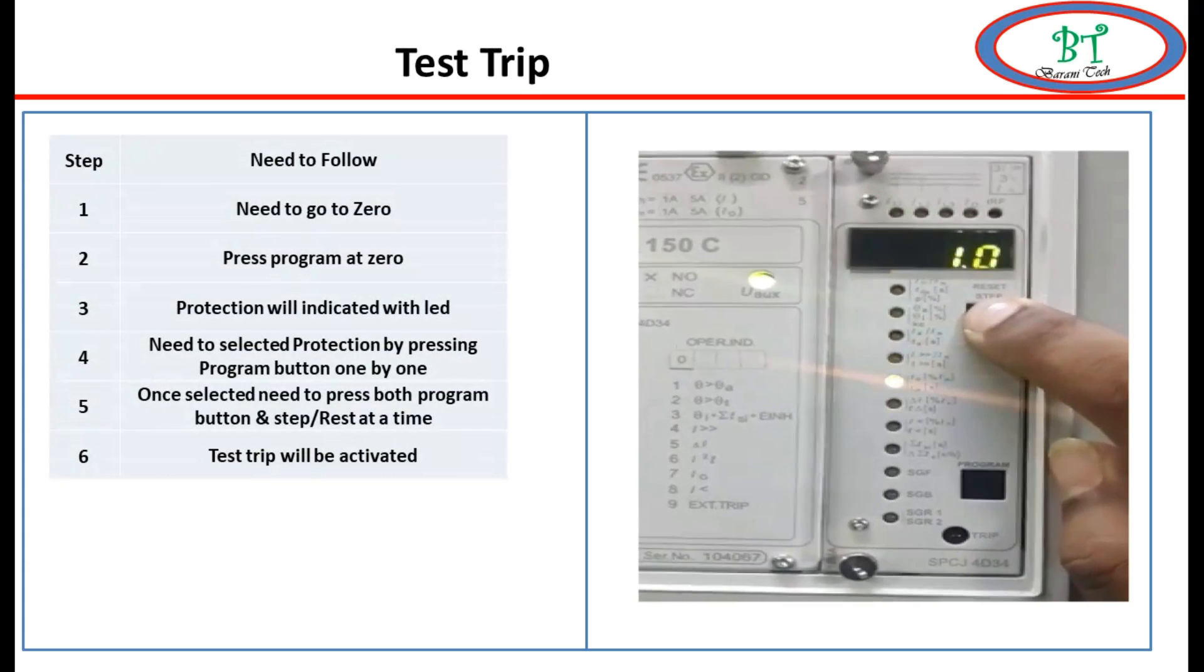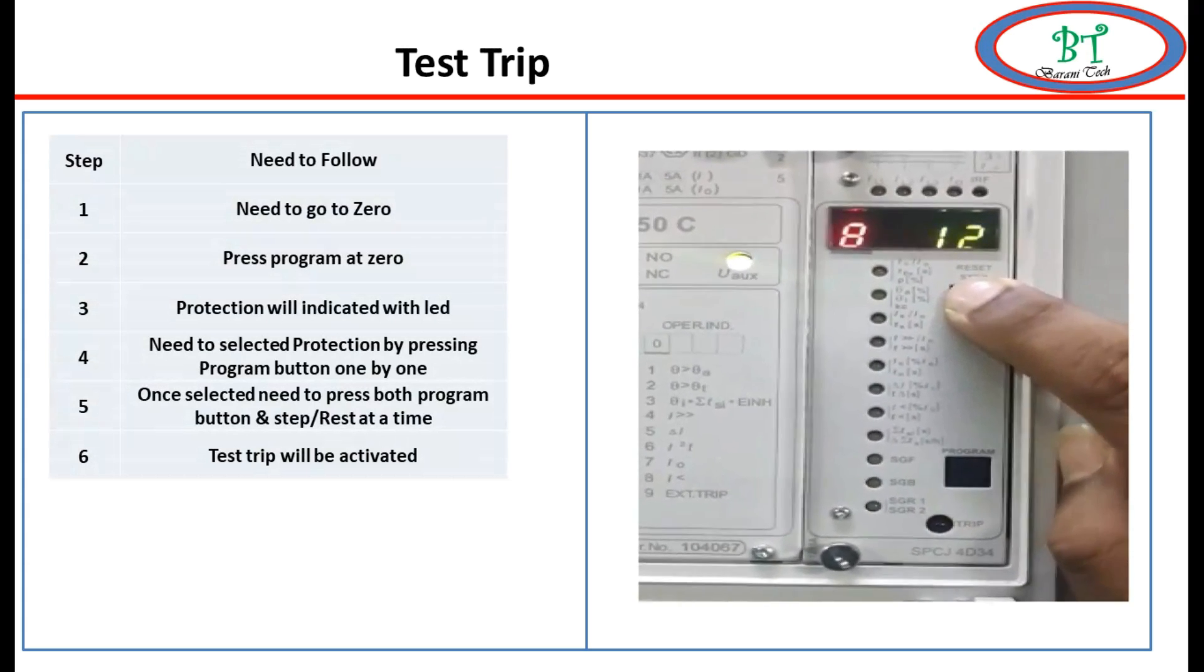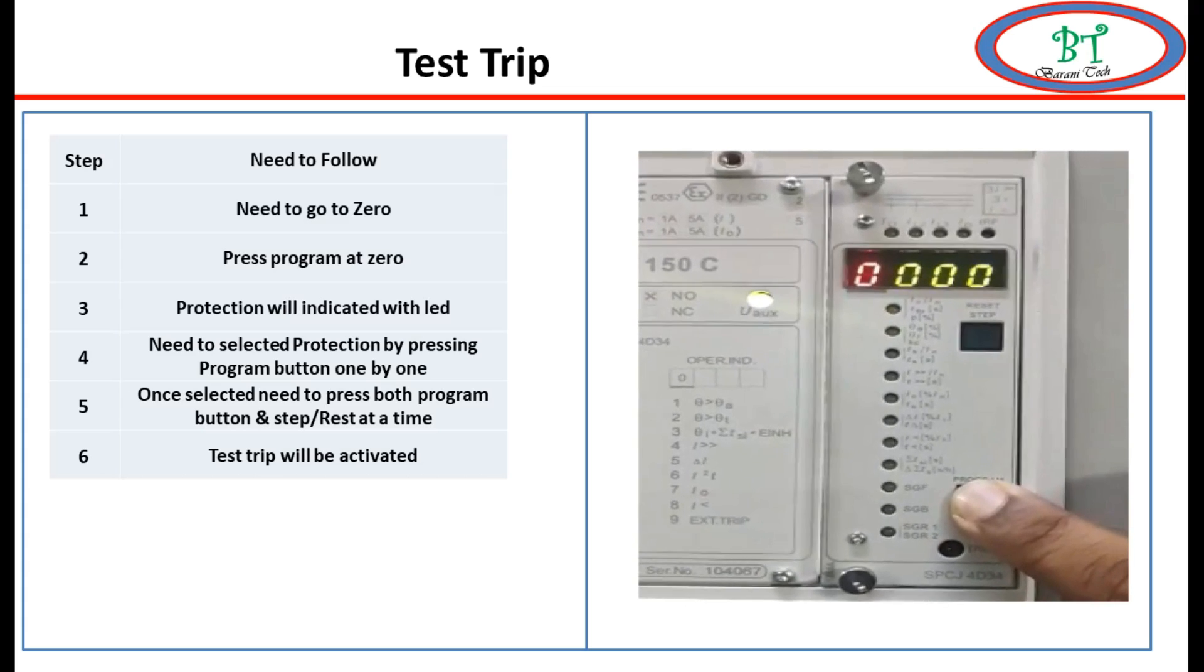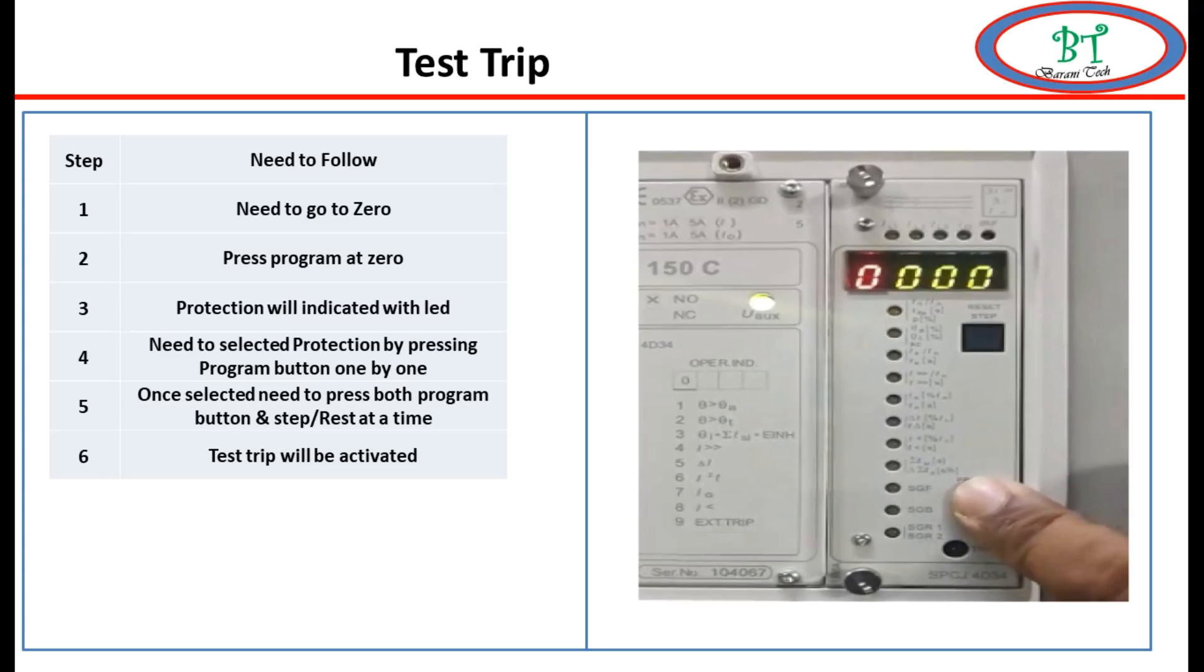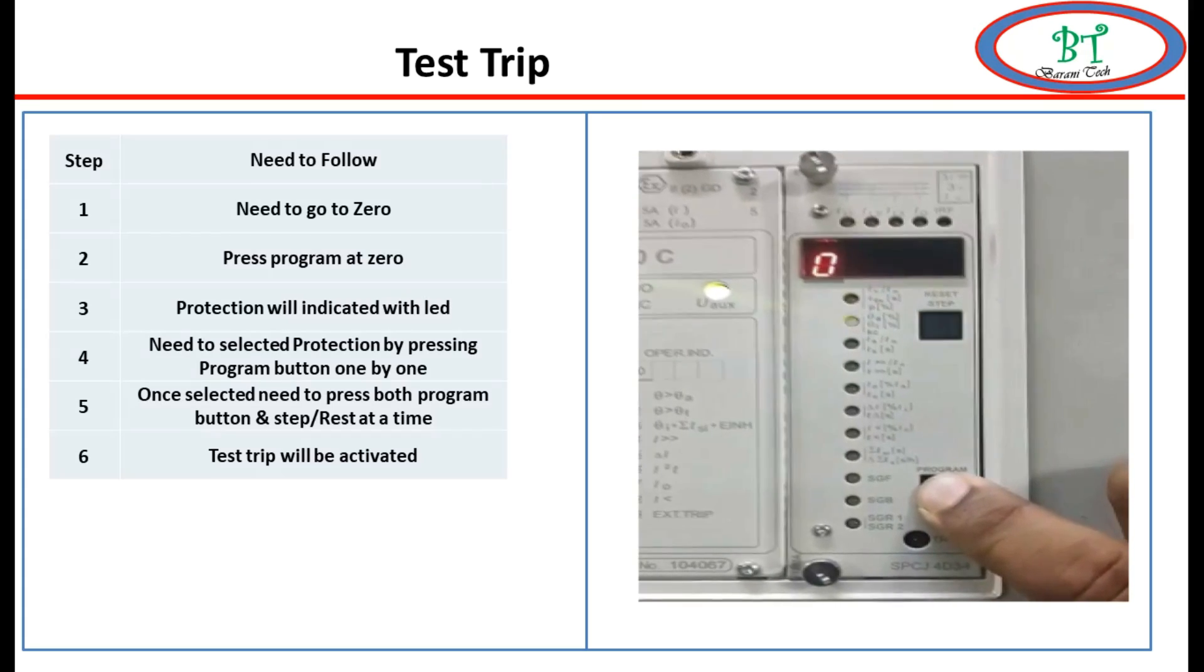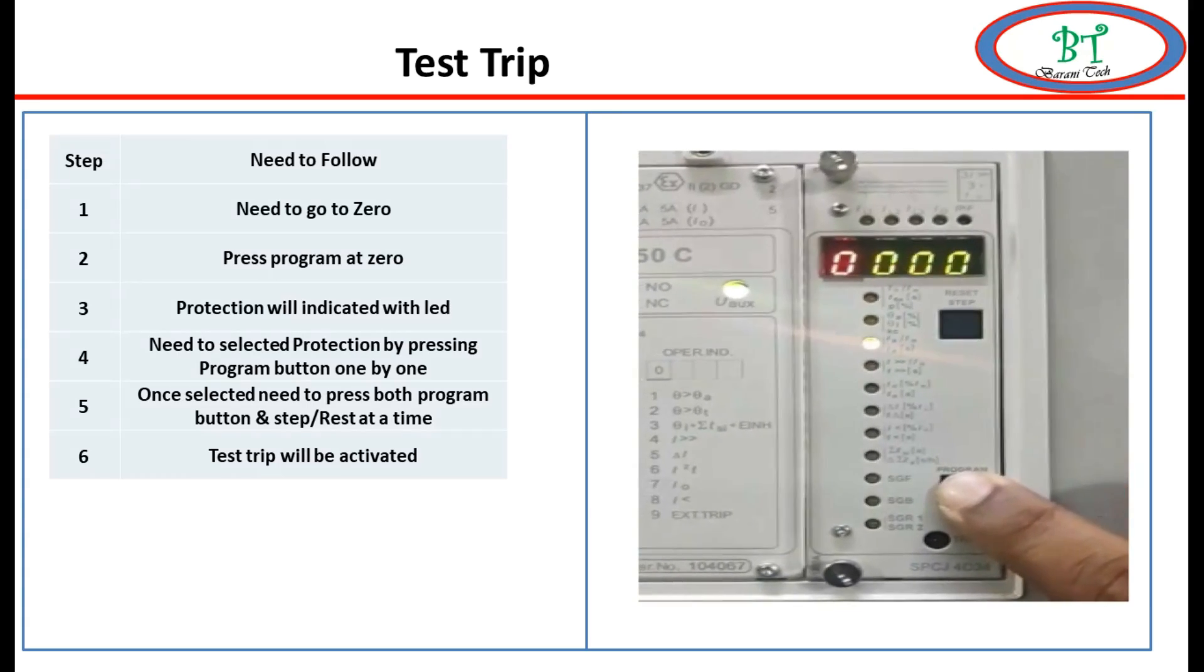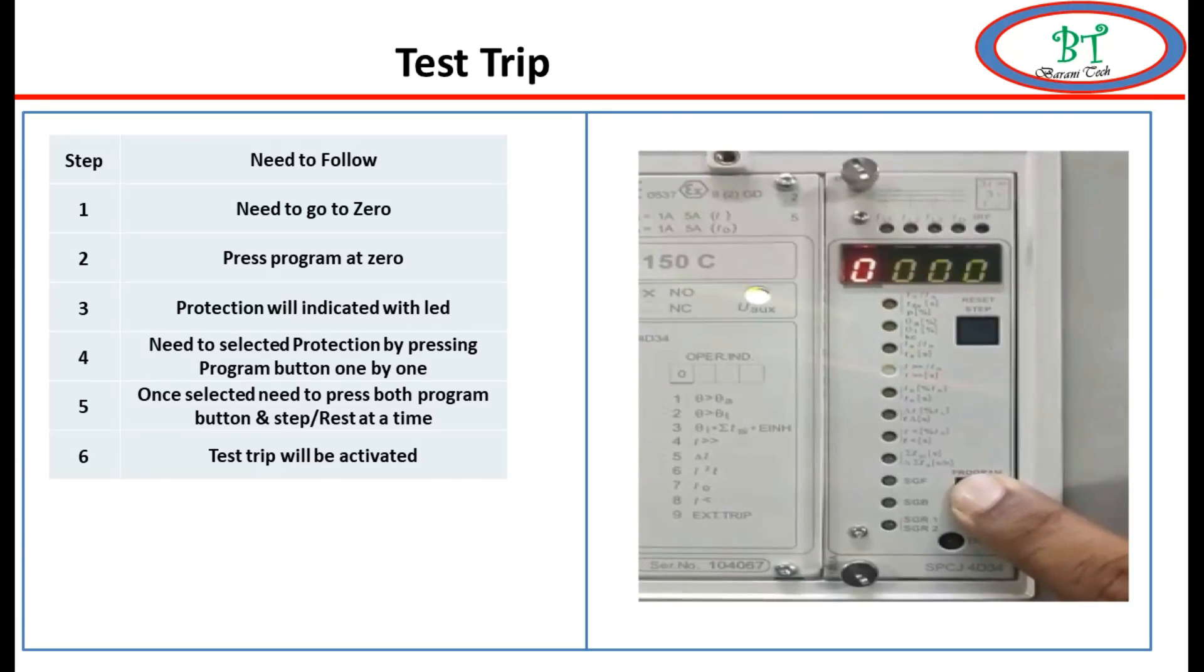After this group configuration, we go down 1, 2, 3 up to 0 item. At 0, need to press 5 seconds for the program button, and 0 will start to blink. Again, need to press the program button for a shorter time. Now the LED on the protection function will start to select. Now we need to choose which protection we need to do for trip test. When we selected the protection, we need to press program and set or reset button at the same time simultaneously.